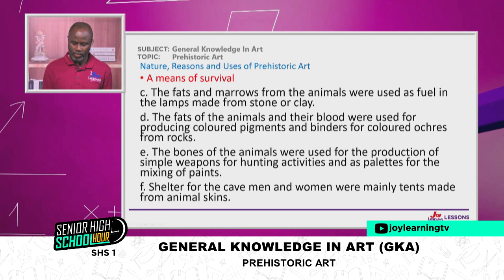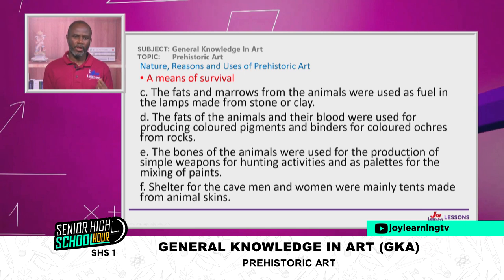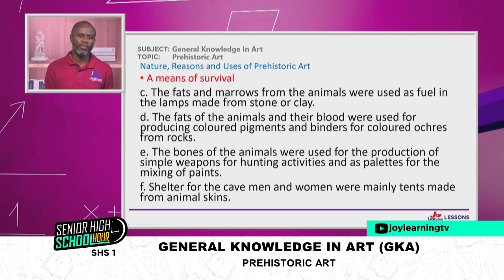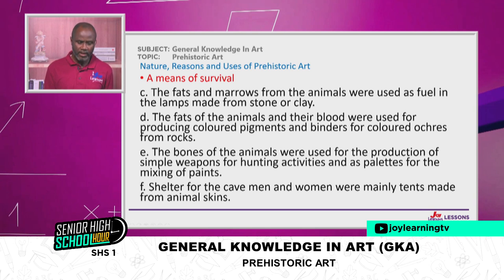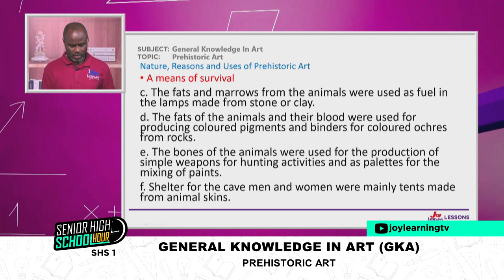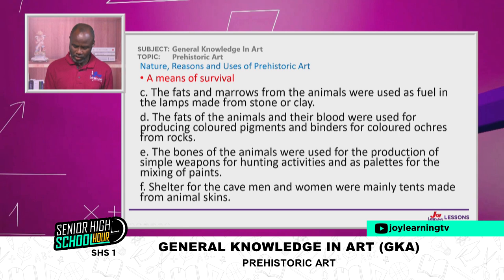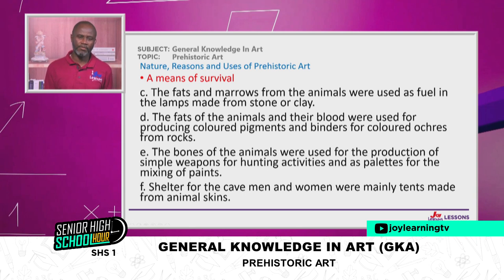The fats and marrow from animals were used as fuel for lamps made from stone or clay, lighting up their caves. The fats and blood of animals were also used for producing colour pigments and binders for coloured ochres from rocks. The bones of animals were used for producing simple weapons for hunting and as palettes for mixing paints. And lastly, for survival, the skins of hunted animals were used as tents to shelter the family.